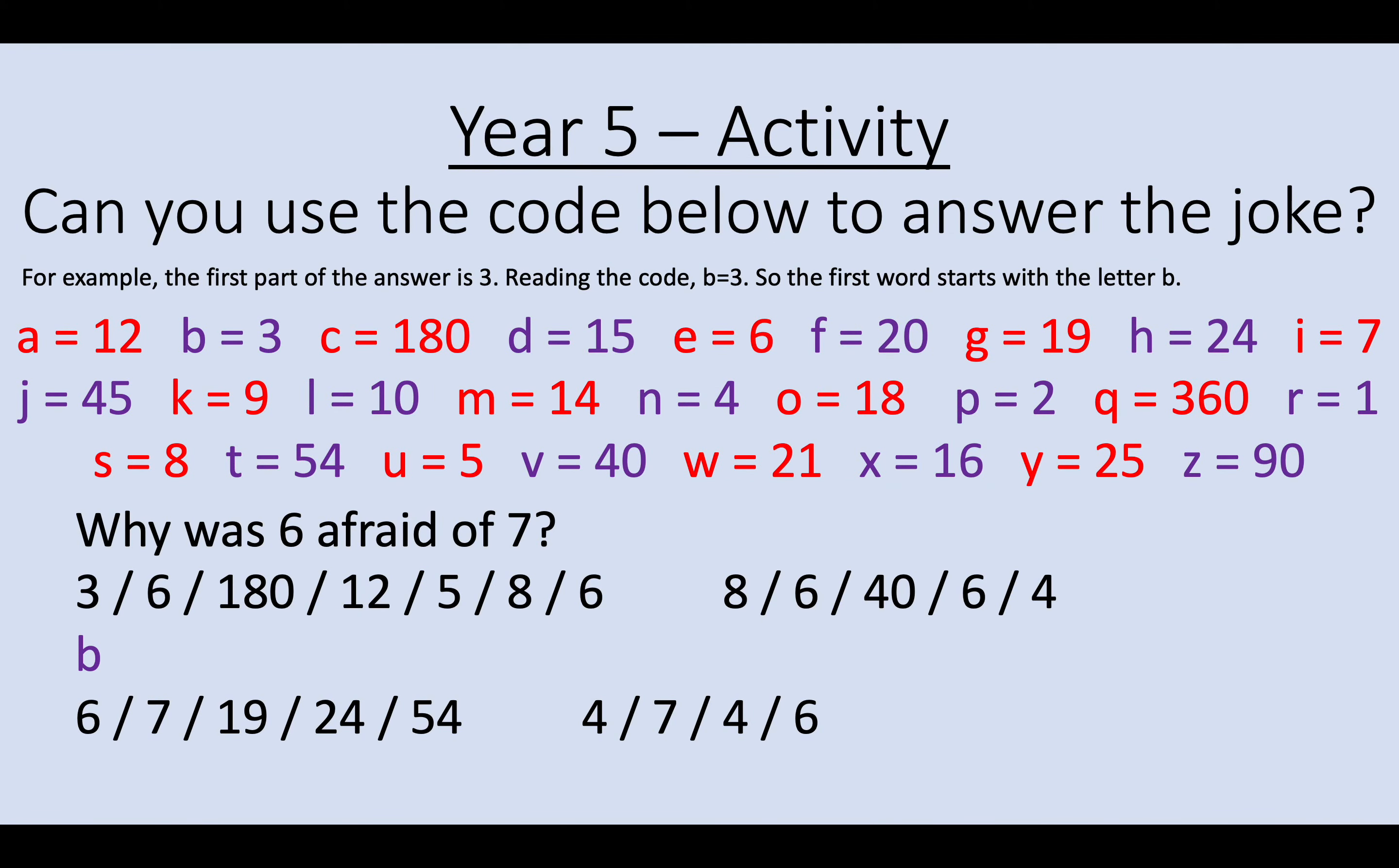Okay. Now, can you use the code below to answer the joke? For example, the first part of the answer, so question 1, your answer was 3. If we look at the code below, which is the alphabet, you should find that the number 3 equals the letter B. So at the bottom part of the screen, I've changed the number 3 for the letter B, which starts answering the joke. You need to do that for all of your answers and you're going to get a joke. The joke is, why was 6 afraid of 7? Good luck completing your challenge for today and well done. Good luck.